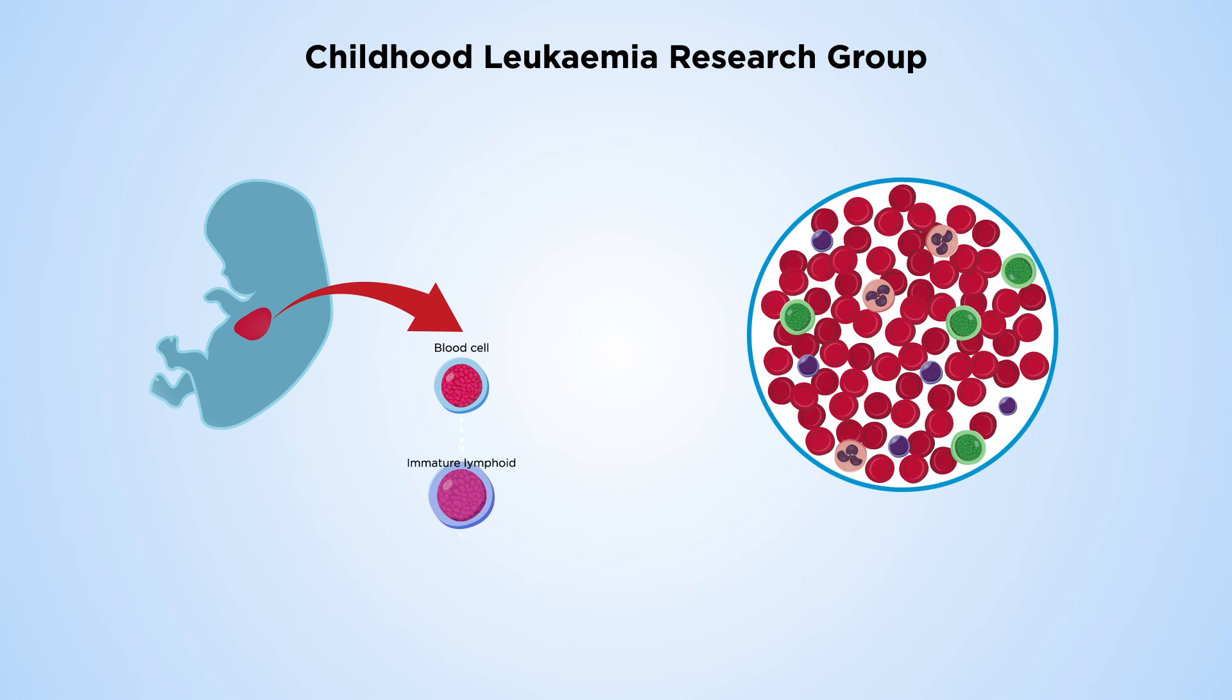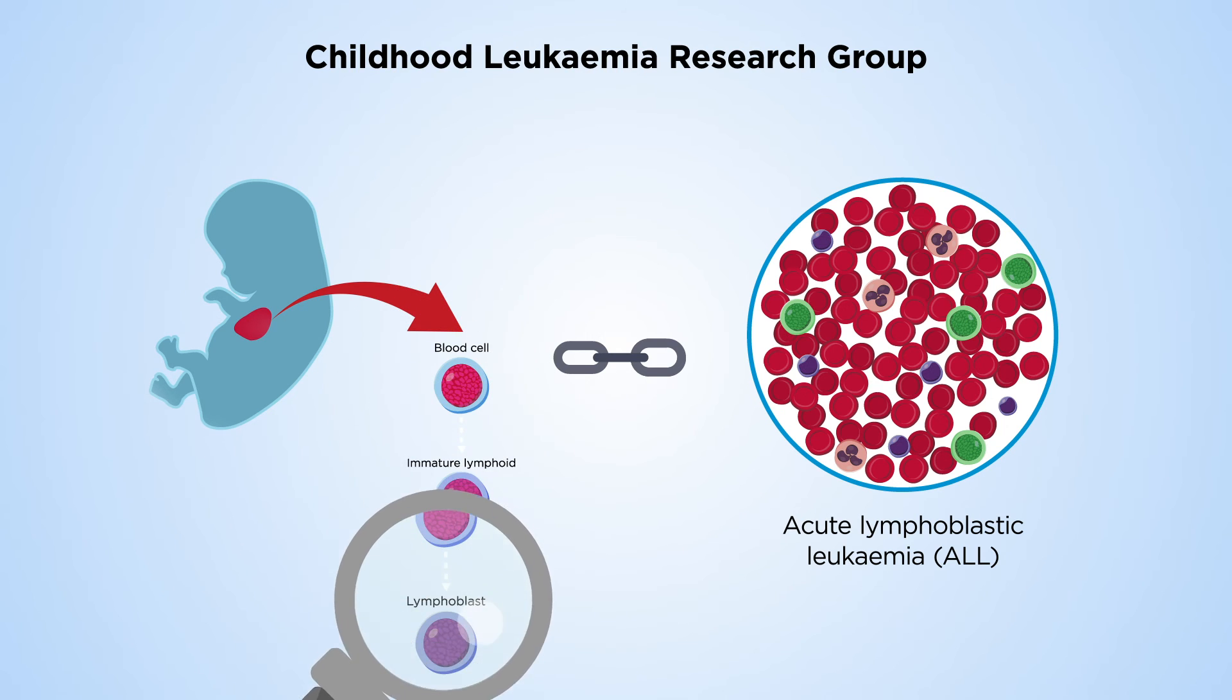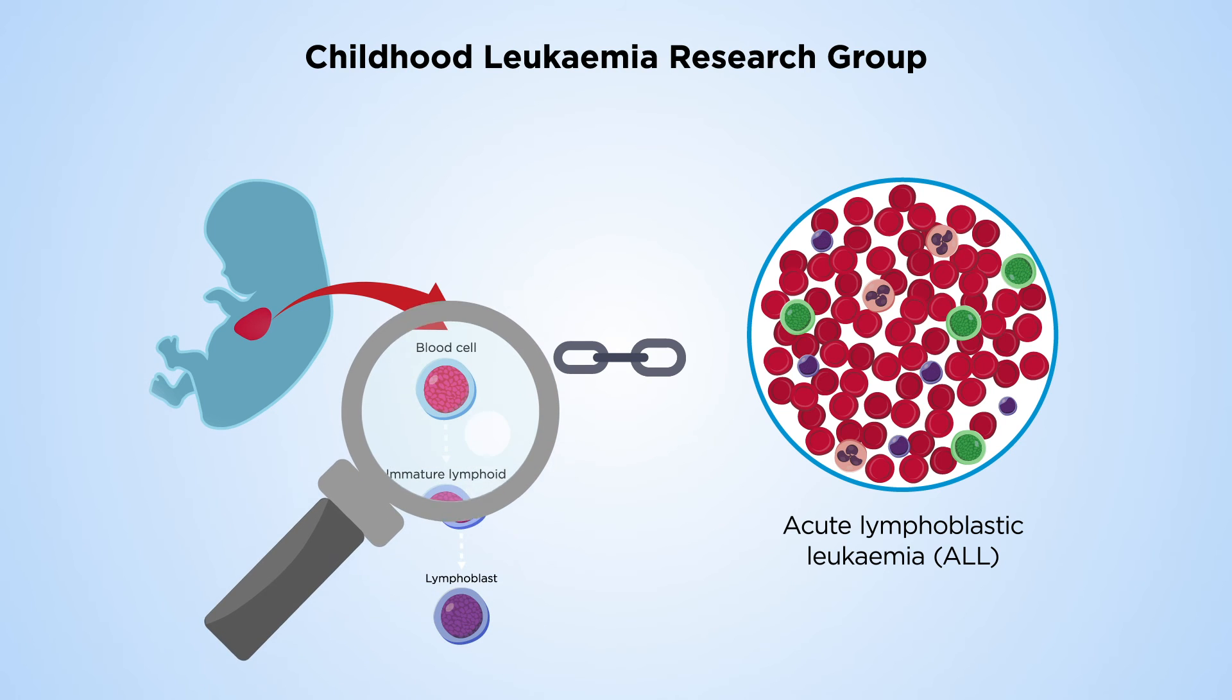The Childhood Leukemia Research Group at the University of Oxford investigates the link between prenatal blood development and the biological origin of infant and childhood ALL. The research aims to identify and characterize the cell of origin of MLLR leukemia. This will allow development of faithful models of the disease to better understand leukemia initiation at different ages.